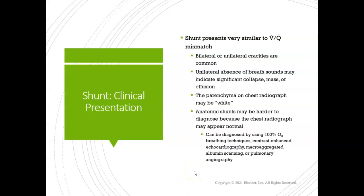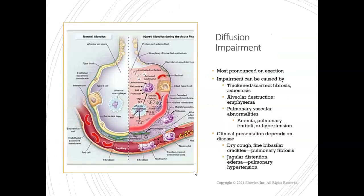Shunts present very similarly to VQ mismatch. Patients can have bilateral or unilateral crackles — common because crackles indicate opening and closing of alveoli seen with atelectasis or fluid-filled alveoli. Absence of breath sounds if areas are completely collapsed, or there's a mass or effusion — and you'll see that white chest x-ray with shunt patients. Anatomical shunts don't really show up on chest x-rays and appear normal; they're usually diagnosed by having the patient breathe 100% O2 and performing an echocardiogram to look at blood flows and oxygen levels.